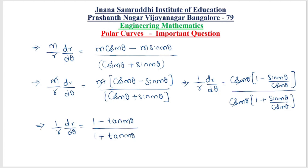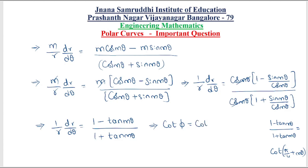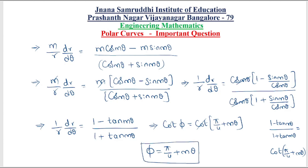We know that 1/r · dr/dθ equals cot φ. We also have the formula: (1 − tan mθ)/(1 + tan mθ) equals cot(π/4 + mθ). Therefore cot φ equals cot(π/4 + mθ), and cot cancels on both sides. The final answer is φ equals π/4 + mθ. So the angle between the radius vector and the tangent for the given curve is π/4 + mθ. If you find this video useful, please do like, share, and subscribe. Thank you.